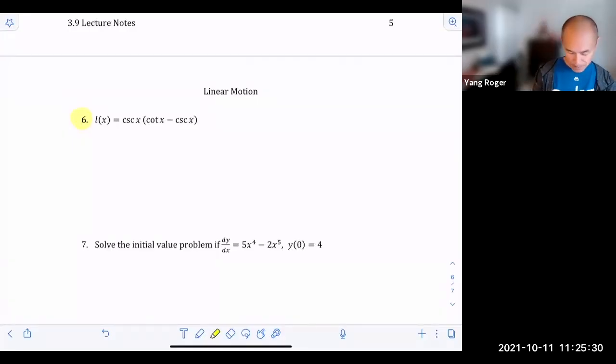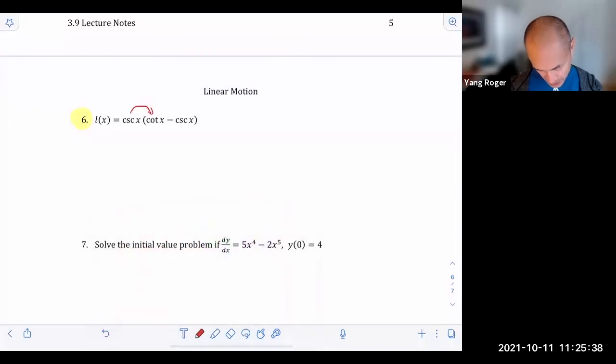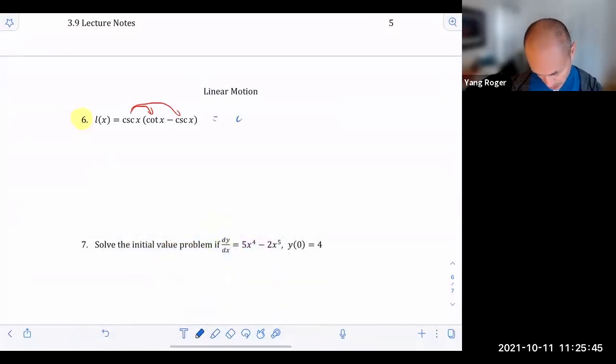All right. So I think we need to do the same idea that we did the last time, which is you got to distribute this cosecant x. So when we do that, we're going to get this is equal to cosecant x cotangent x minus cosecant squared x.